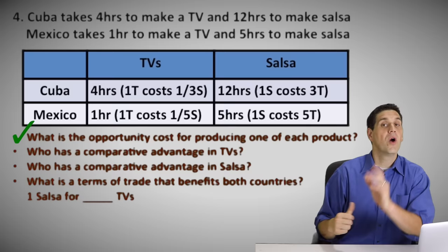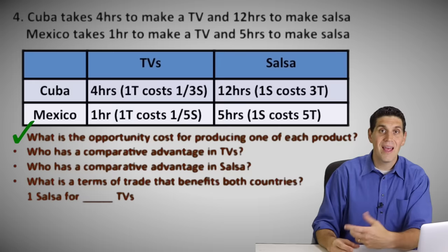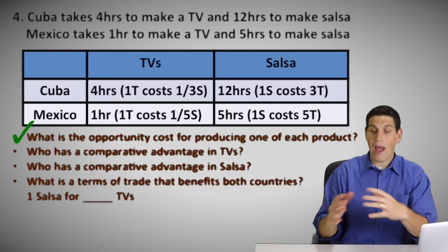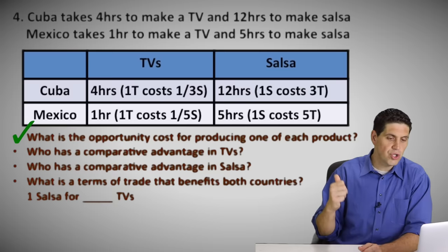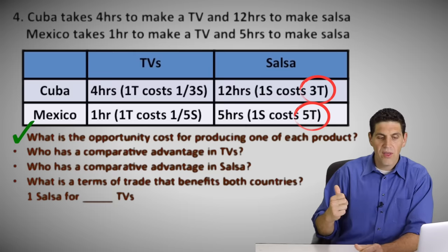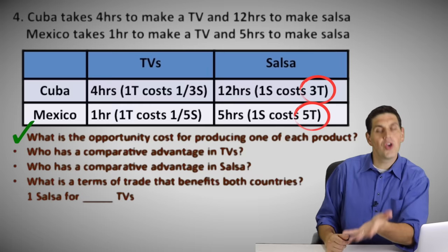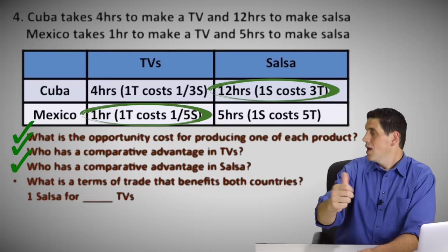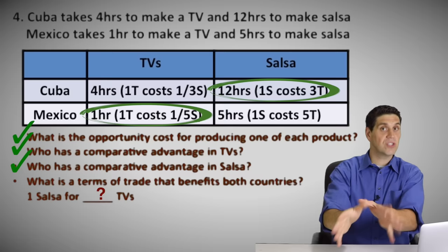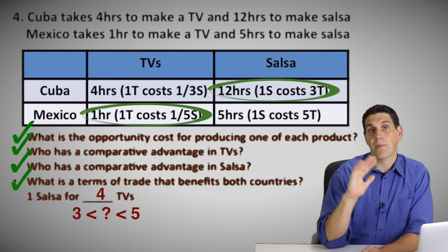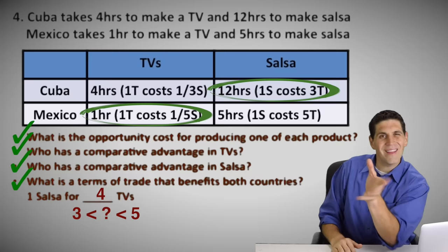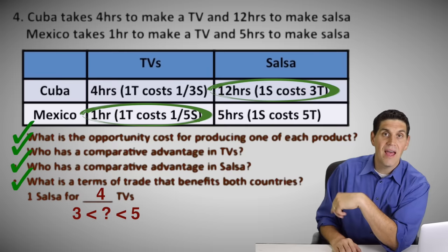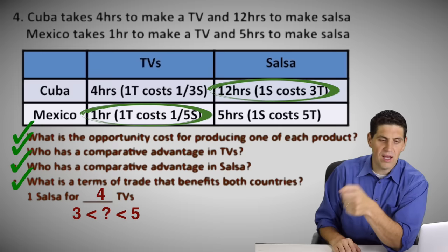Now we're at the same stage as before to figure out comparative advantage. For salsa, who should specialize — the country that gives up three TVs or the one that gives up five TVs? Cuba has a lower opportunity cost — they only give up three TVs. So Cuba has a comparative advantage in salsa, which means Mexico has a comparative advantage in TVs. For the terms of trade, one salsa for four TVs would benefit both countries. Getting the per unit opportunity cost for input questions is different, but once you've got that, you're doing the same thing as before — who has a lower opportunity cost, then determine terms of trade.